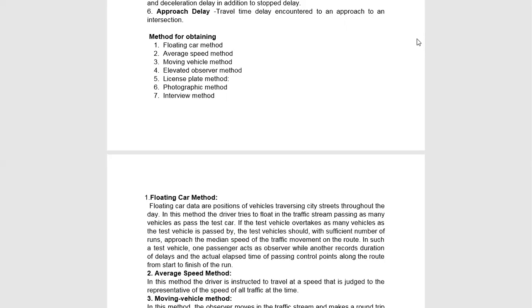The first observer's job is to record everything. The second observer's job is to record the time, location, and causes of delay — which the first observer noted on the second stopwatch. The second observer will write it in tabular form or use voice recording equipment and then transcribe it into a form.